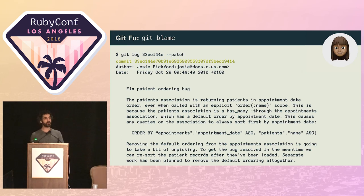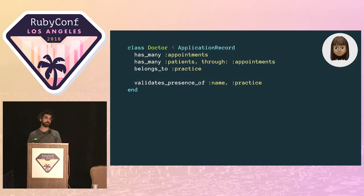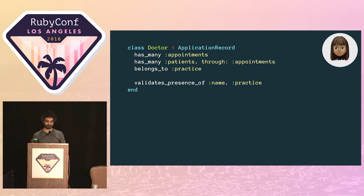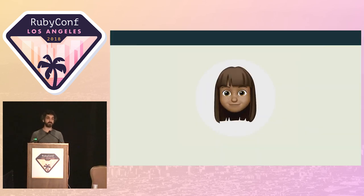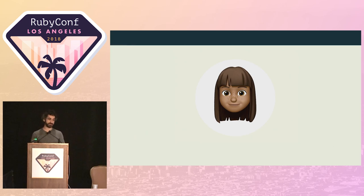Seema reads the message: this was a workaround for the default ordering on the appointments association. She also notices the commit message mentions something about removing the default ordering altogether, and sure enough, when she checks the model, it's gone. She guesses whoever removed it must have forgotten about the in-memory sort. With the mystery solved, Seema feels confident that she can remove the in-memory sort and carry on with her work.